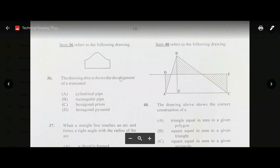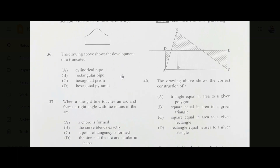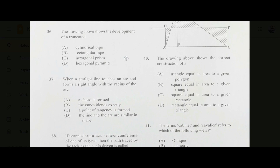Number thirty-six: the drawing shows the development of a truncated cylindrical pipe — answer A. Number thirty-seven: when a straight line touches an arc and forms a right angle with the radius of the arc, a point of tangency is formed — answer C.